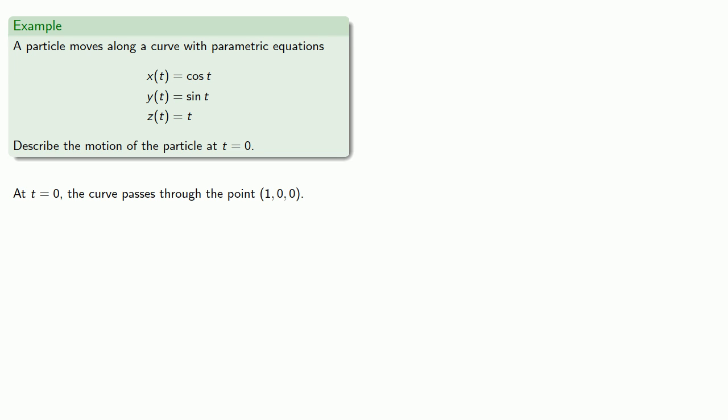Now that tells us we're at the point one, zero, zero, and so we can find the derivatives at t equal to zero.